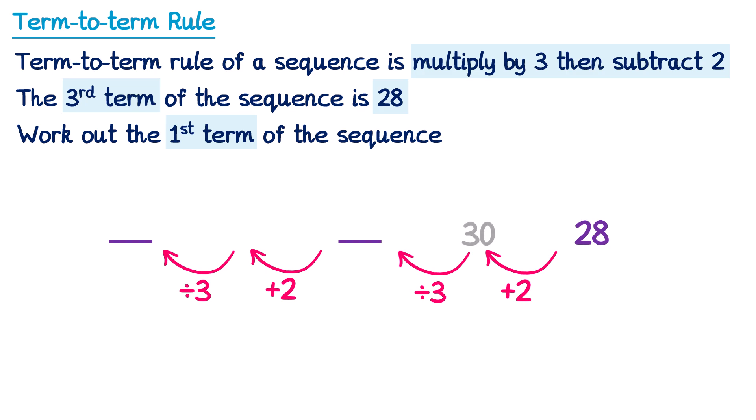Now I've put 30 in grey here, because it's not actually a term of the sequence. We haven't finished applying the term-to-term rule in reverse yet. Then from 30, we divide by 3, which gives you 10. So the second term was 10. Then from 10, we add 2, which is 12. Again, 12 isn't actually a term of this sequence, which is why I put it in grey. And then we do 12 divided by 3, which is 4. So the first term of the sequence must have been 4. So the answer is 4.